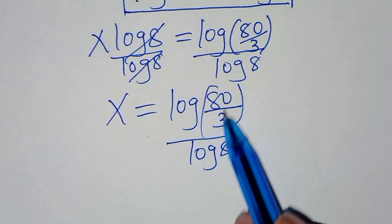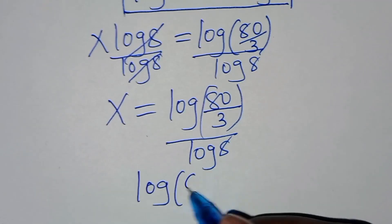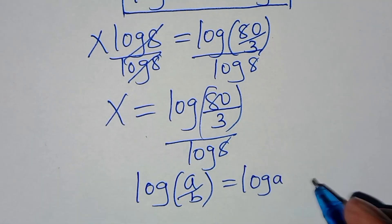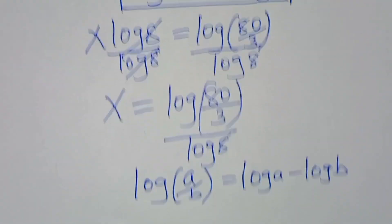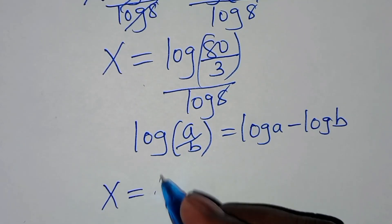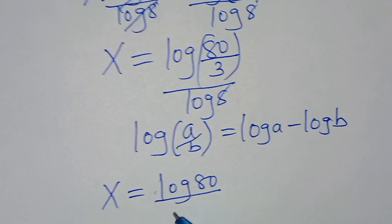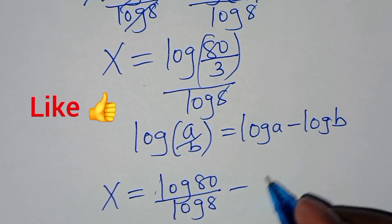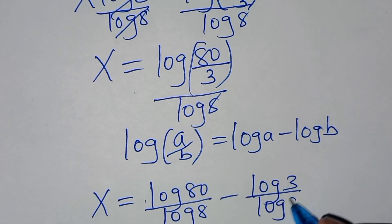You find that log(80/3) is in the form of log(A over B), which we can express as log A subtract log B. So applying this logarithm property, then x will be equal to log 80 divided by log 8, then subtract log 3 divided by log 8.